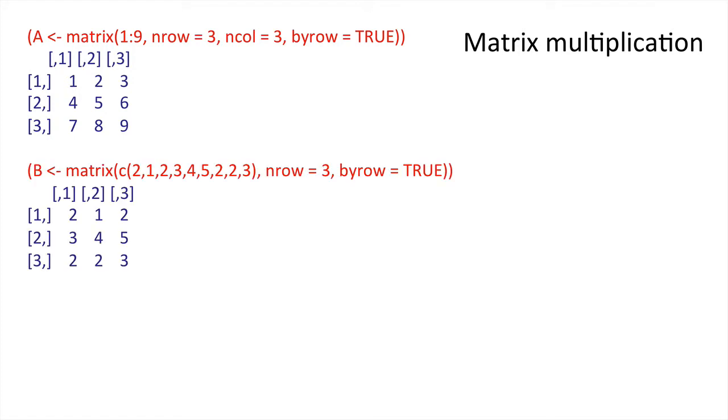We can conduct matrix multiplication. For example, we can define A as a matrix with elements 1 to 9 and fill that square matrix with 3 by 3 by row. Likewise, we can define B as a matrix with a whole bunch of elements defined through concatenate. Then if we fill it by row, we don't even have to define the number of columns.